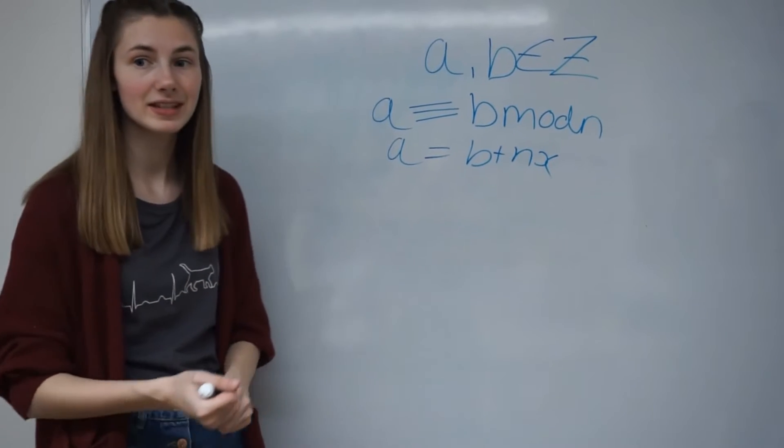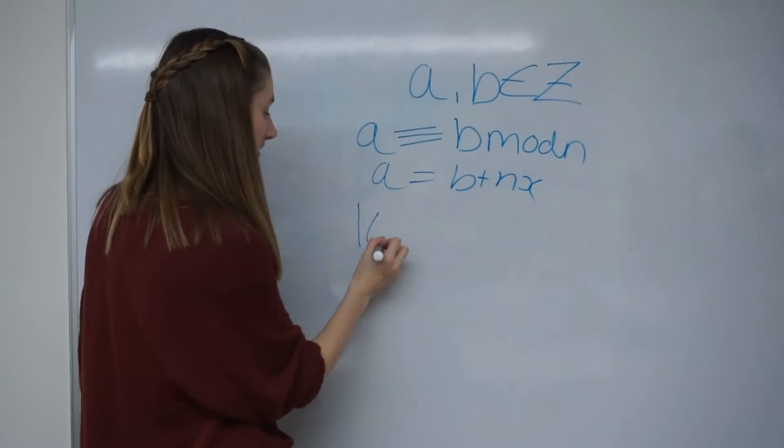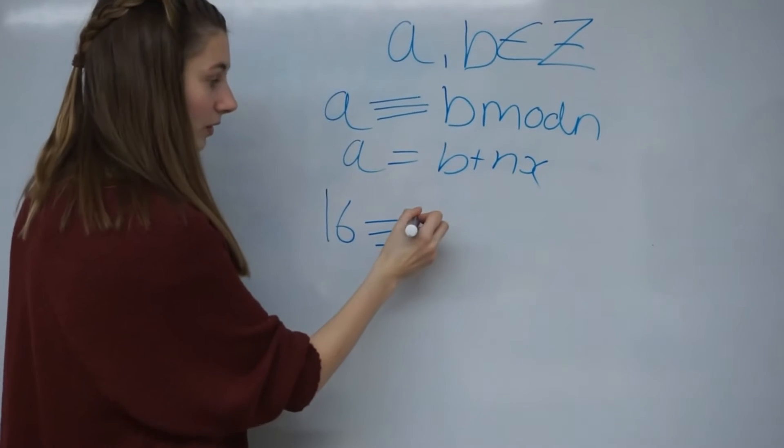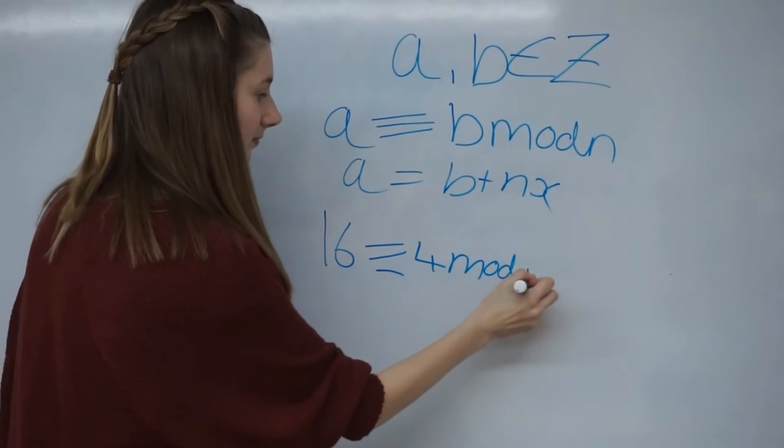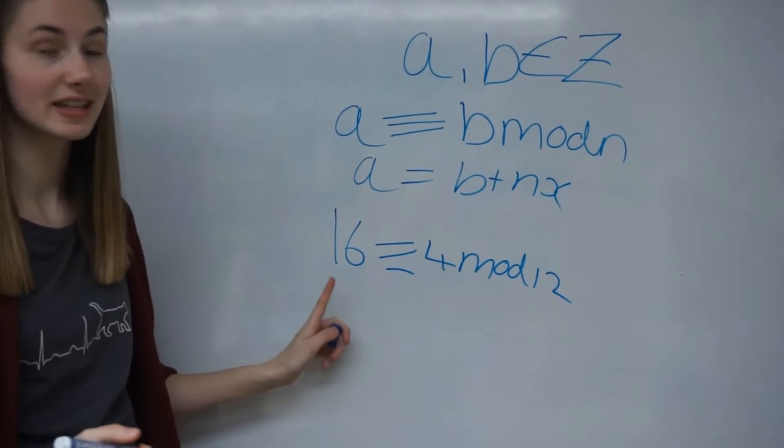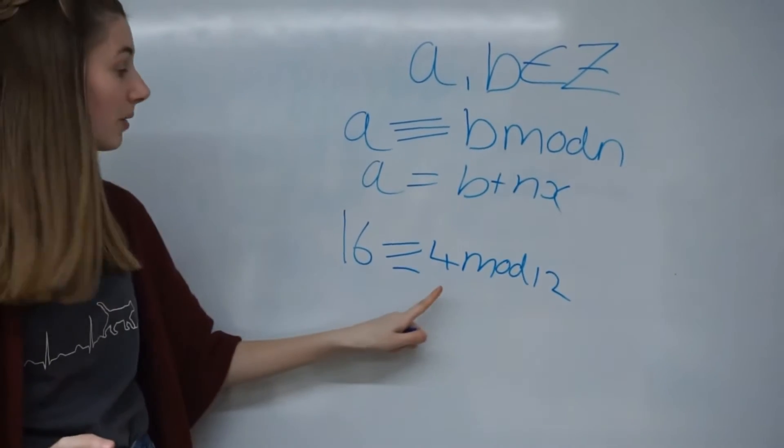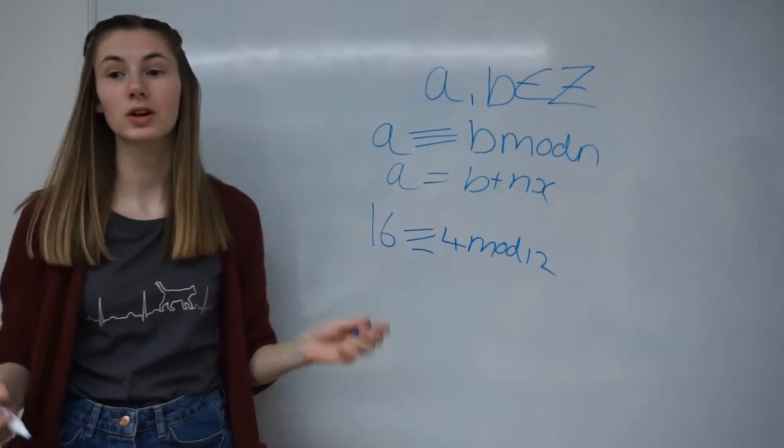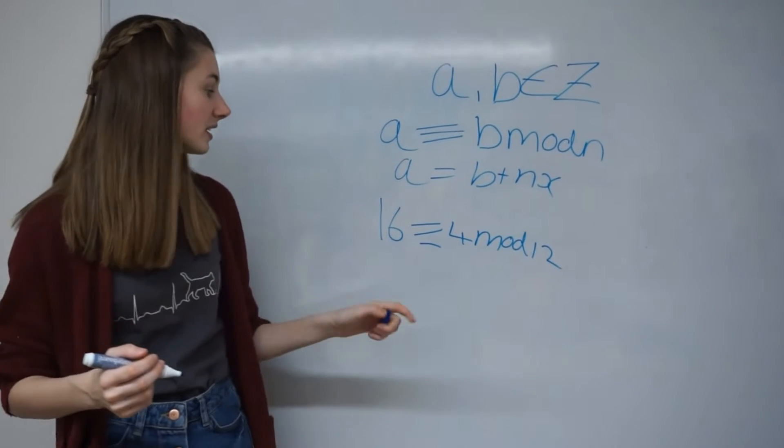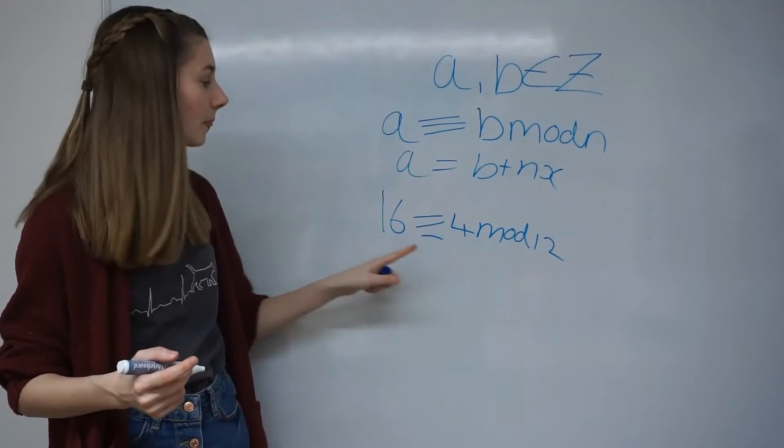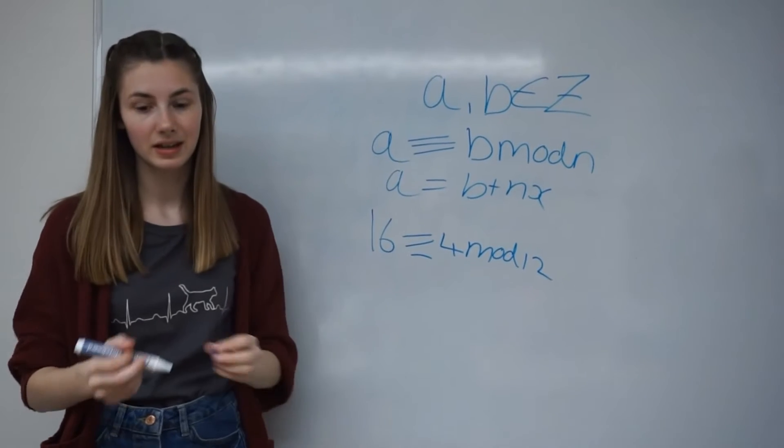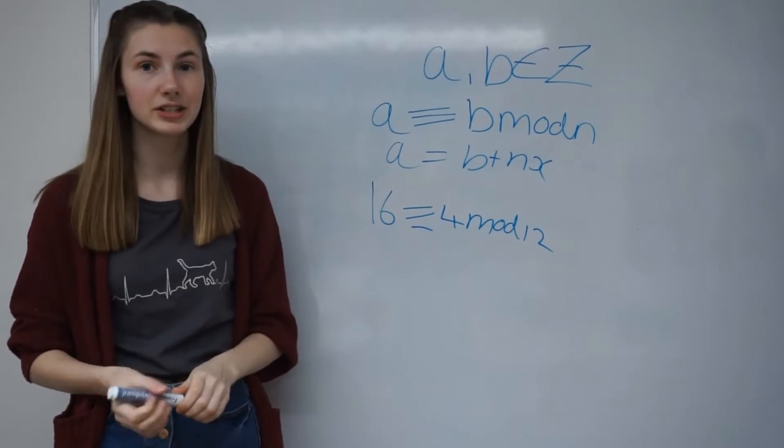An example of this is we can write 16 to be congruent to 4 mod 12. And this basically means that 16 equals 1 times 12 plus 4. And then this is where we get clock arithmetic from. We can say 16 on 24 hour clock is 4 p.m. because 12 plus 4 is 16. And then we can use this to test the divisibility rules.